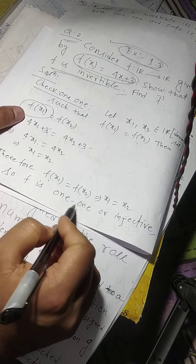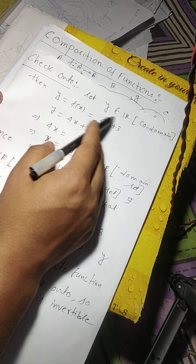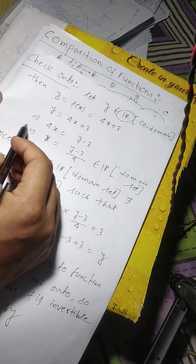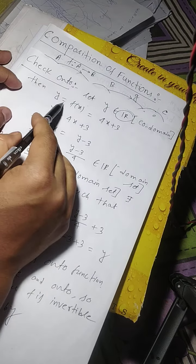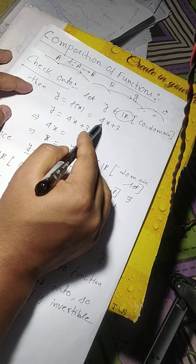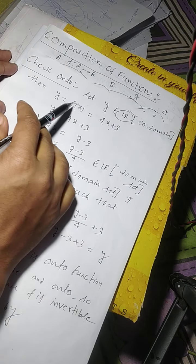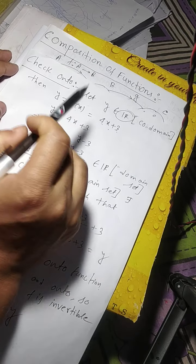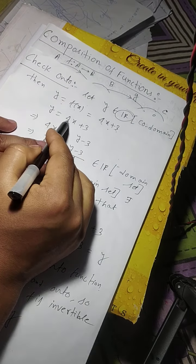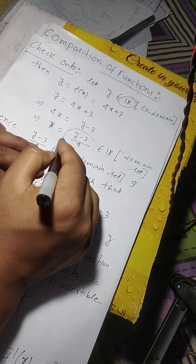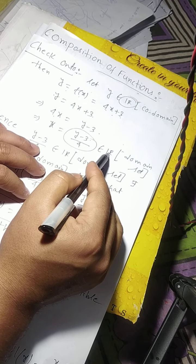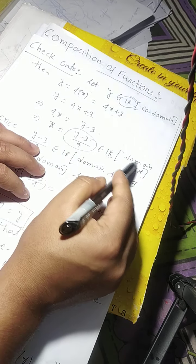Therefore f of x1 equals f of x2 implies x1 equals x2, so f is one-one or injective. Now check onto: let y1 belong to R, that means we take any number y1 from the codomain set. Then y1 equals f of x1 equals 4x1 plus 3. We find x in terms of y: y equals 4x plus 3, so 4x equals y minus 3, giving x equals (y minus 3) divided by 4, which belongs to R.